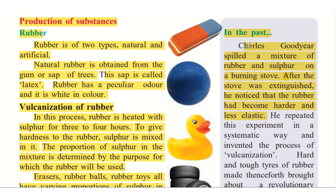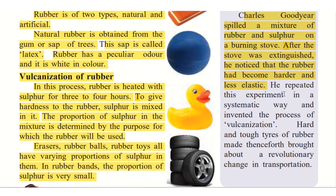That is the scientist Charles Goodyear. Then what he did is he repeated this experiment in a systematic way. He went on adding little by little sulphur to it, checking and researching on it. He noted down his findings and invented the process of vulcanisation — that is, changing the soft rubber to hard rubber.